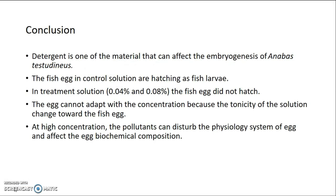In conclusion, detergent is one of the materials that can affect the embryogenesis of Anabas testudineus. The fish eggs in the control solution hatched as fish larvae, while the fish eggs in the treatment solutions of 0.04% and 0.08% did not hatch. The fish eggs in the treatment solutions could not adapt to the concentration because once the detergent was added, the tonicity of the solution changed and caused the eggs to burst. At high concentration, the pollutant disturbs the physiological system of the fish egg, affecting its biochemical composition and preventing hatching.